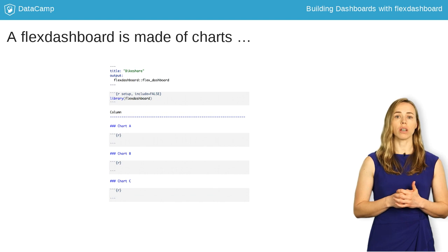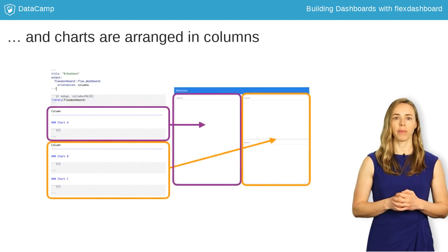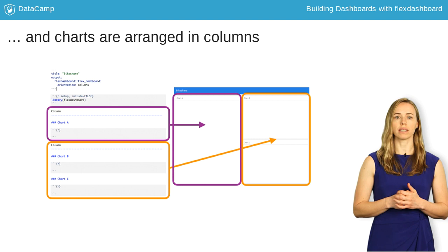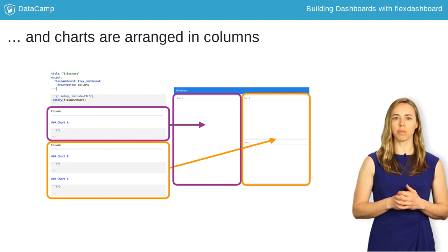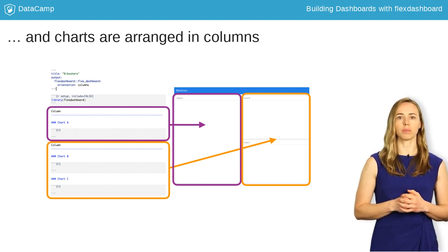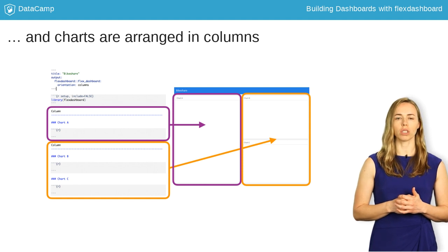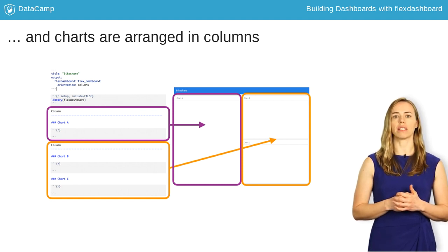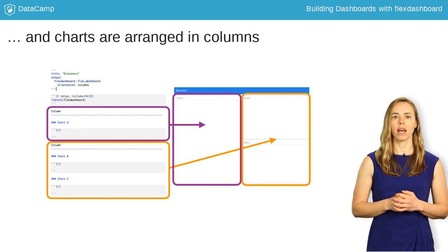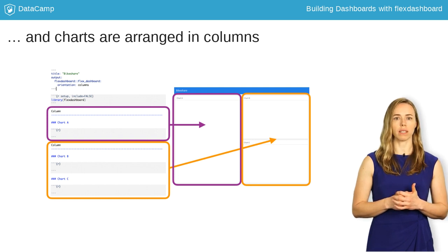Charts are arranged in columns. Every chart is in exactly one column, but a column can contain multiple charts. You can create a dashboard without specifying columns, and all charts will stack up in a single column by default. However, usually you'll want to specify the columns directly.